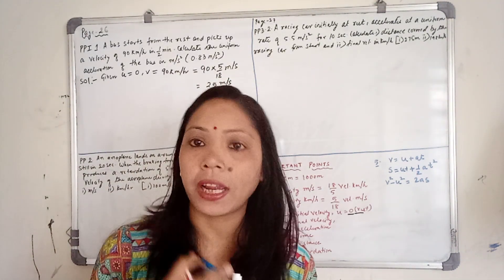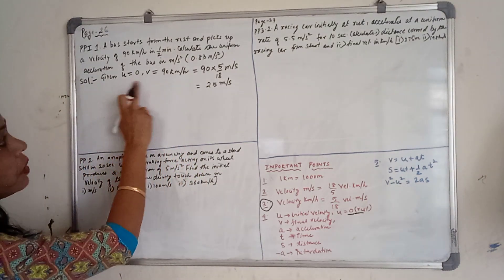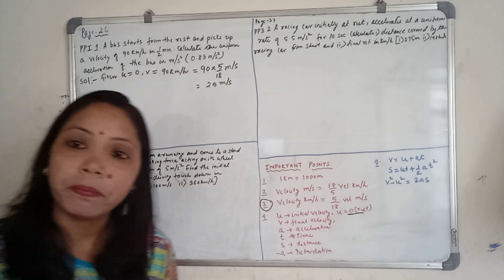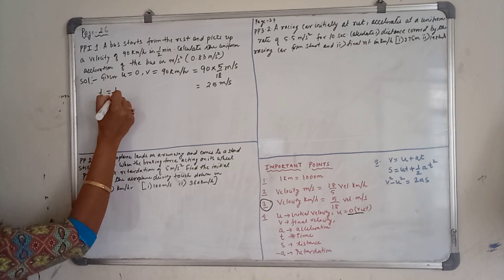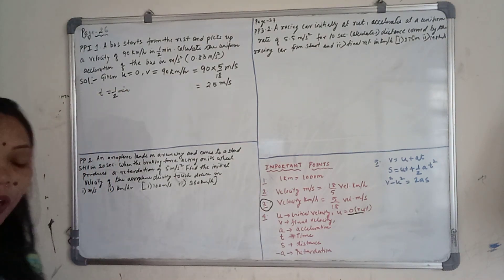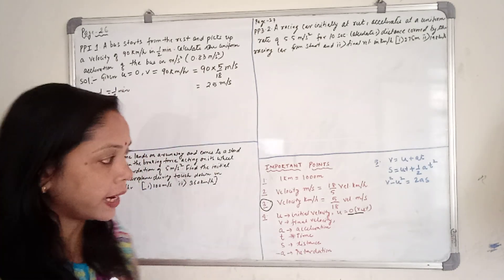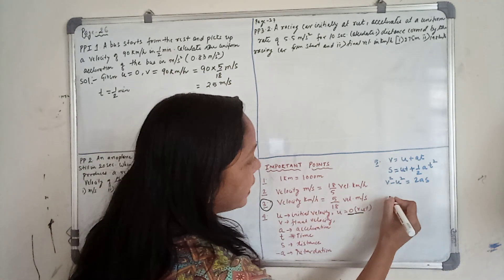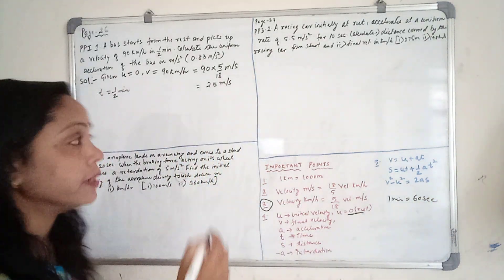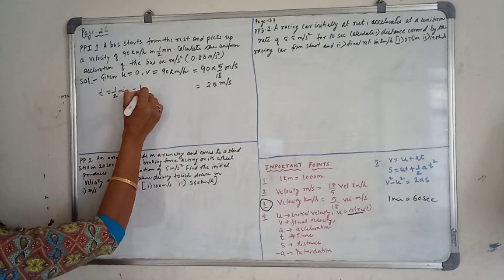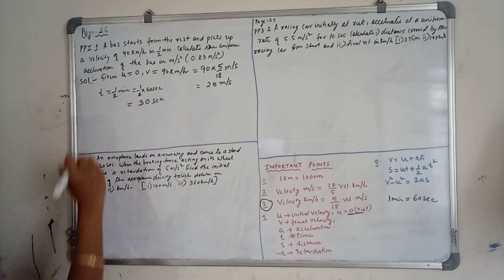So initial velocity U equals 0, final velocity V equals 25 meters per second. Time T equals half a minute. We convert: half × 60 seconds = 30 seconds.